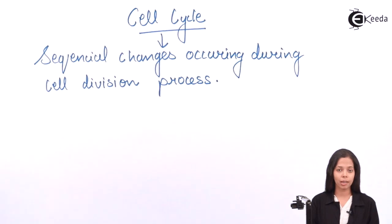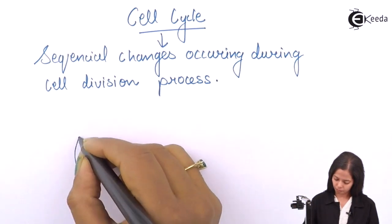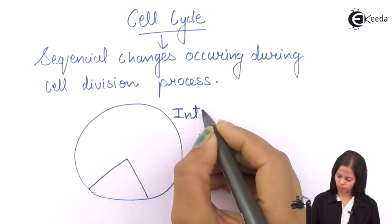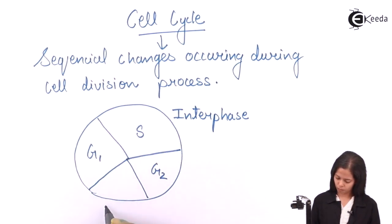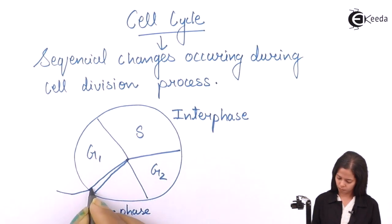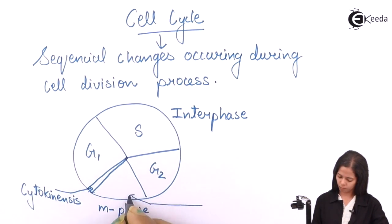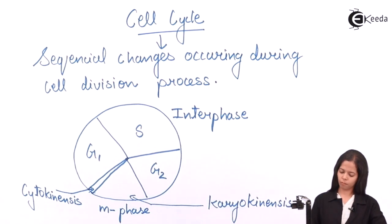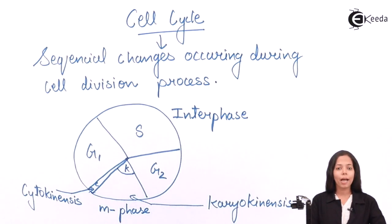Speaking about interphase, it contains three phases: G1, S, and G2. Karyokinesis is further divided into four phases: prophase, metaphase, anaphase, and telophase.